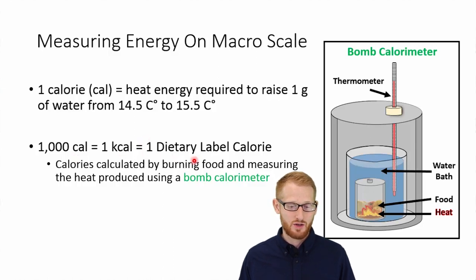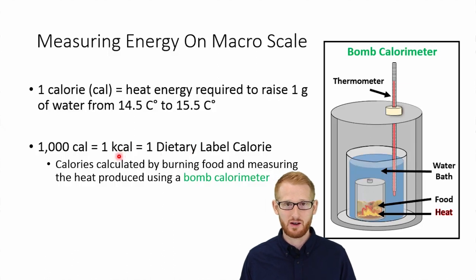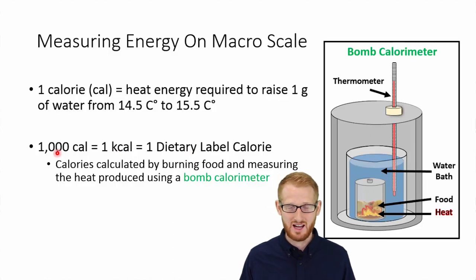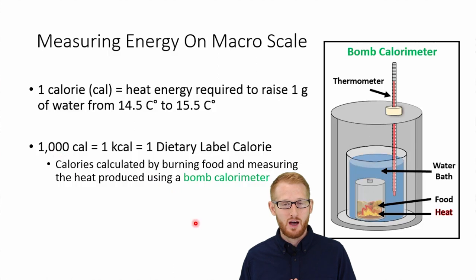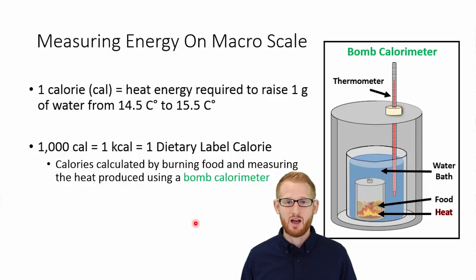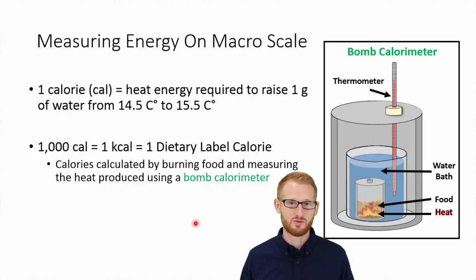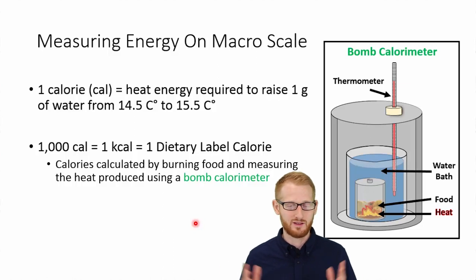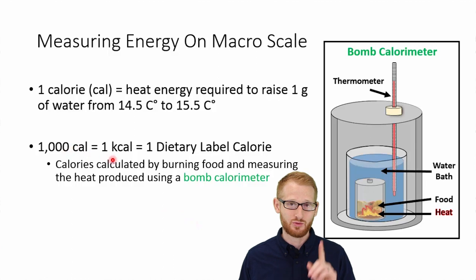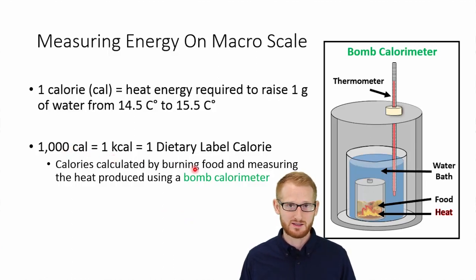In the United States, one dietary label calorie is actually equal to one kilocalorie, which is essentially 1,000 calories. So if you are looking at the calories on a dietary label, it's not like you're suddenly eating 1,000 times the number of calories you originally thought — your units were just a little off. 1,000 calories equals one kilocalorie, which is one dietary label calorie in the United States.